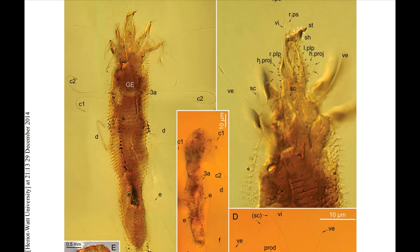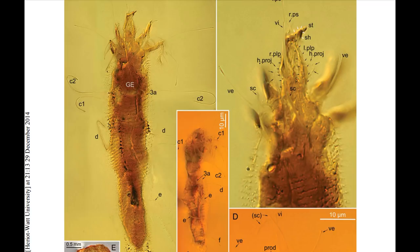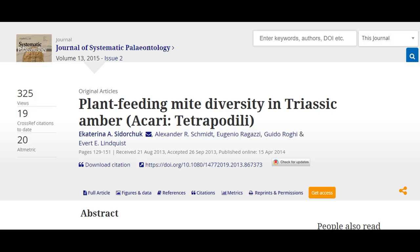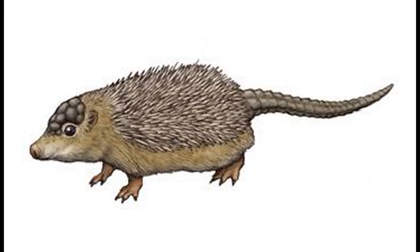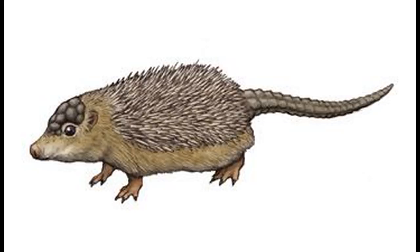The most famous amber fossils are clearly the arthropods. The oldest of these date to Triassic strata of Italy some 230 million years ago, and contain plant-feeding mites, as indicated by the 2013 paper 'Plant-feeding Mite Diversity in Triassic Amber.' Also with regard to mites, mites of the family Myobidae have been found in amber along with mammal hairs dating to the Eocene. The hairs were identified as belonging to a member of the family Amphilimuridae, a clade of small insectivores sister to hedgehogs. This indicates that the eulipotiphla-specific parasitism of those mites was already present 40 million years ago.